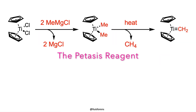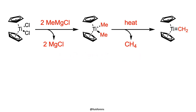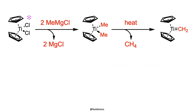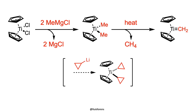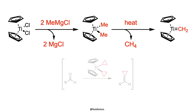An alternative way to prepare the active olefinating reagent entails the use of the Petasis reagent. In contrast to the Tebbe reagent, homologues of the Petasis reagent are relatively easy to prepare by using the corresponding alkyllithium reagents, allowing the conversion of carbonyl groups to alkylidenes.